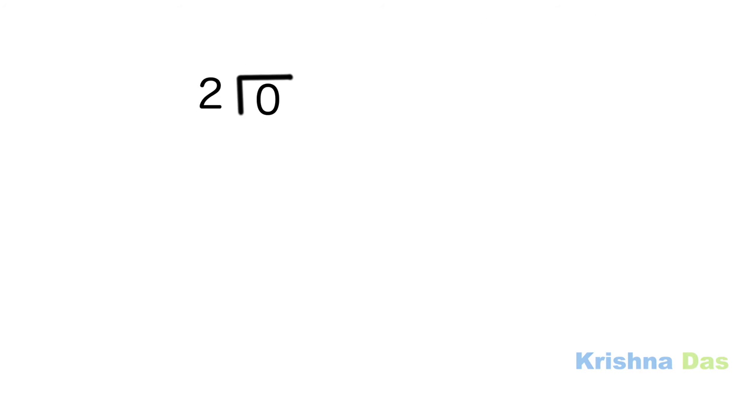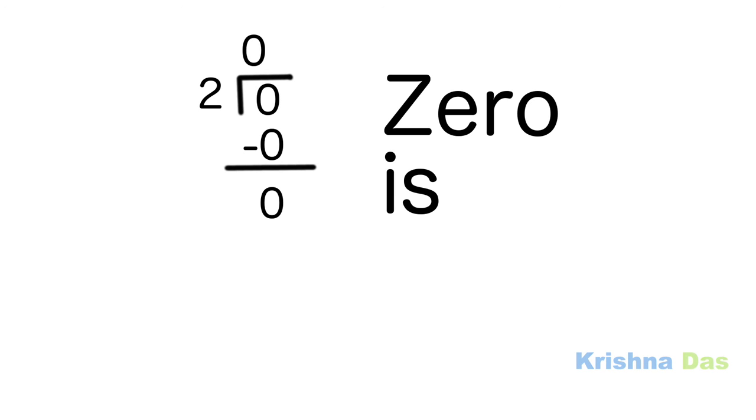So let's divide zero by two. Two times zero equals zero. Zero minus zero equals zero. So since we are not getting any remainders, that means zero is even!